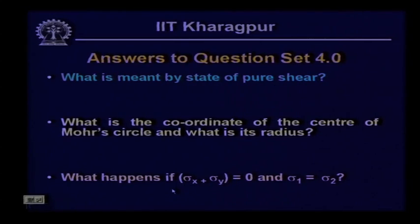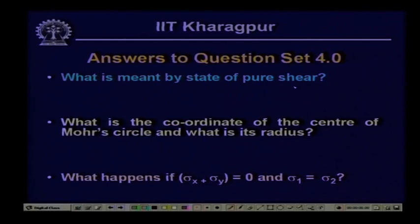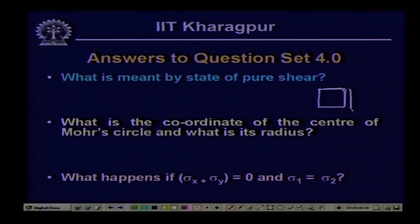Having recapped the last lesson's concepts of transformation equations and Mohr's circle, let us now answer the questions posed previously. The first question: what is meant by state of pure shear? At a point in a stressed body acted on by normal stresses and shearing stress components, if we have no normal stress and only shear stresses, then we say that particular point is subjected to a pure state of shear.